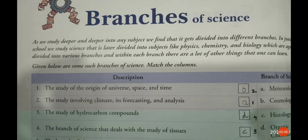Now moving on to the second topic, that is the branches of science. As we study deeper and deeper into any subject, we find that it may get divided into different branches. In junior school, we studied science, which is later divided into subjects like physics, chemistry, and biology, which again divide into various branches. Within each branch, there are a lot of other things that can be learned. In the description, the study is mentioned and along with that I will give you the branch of science that matches.